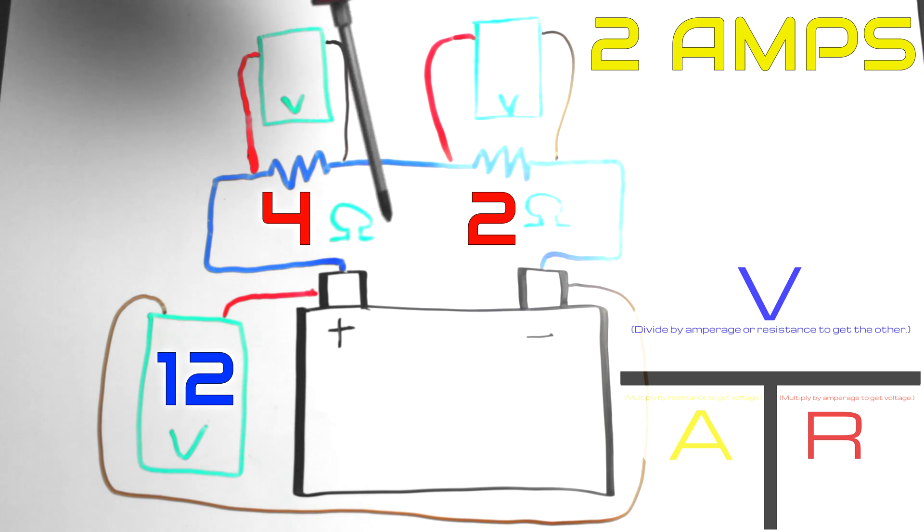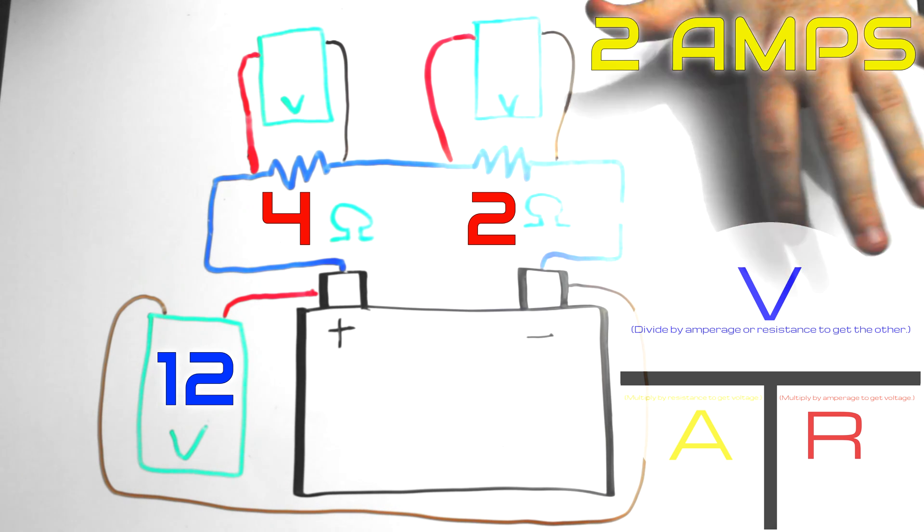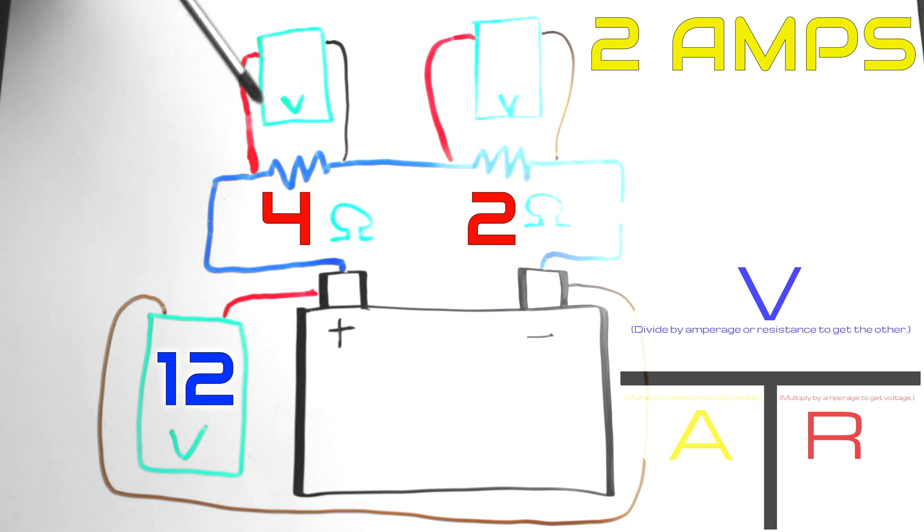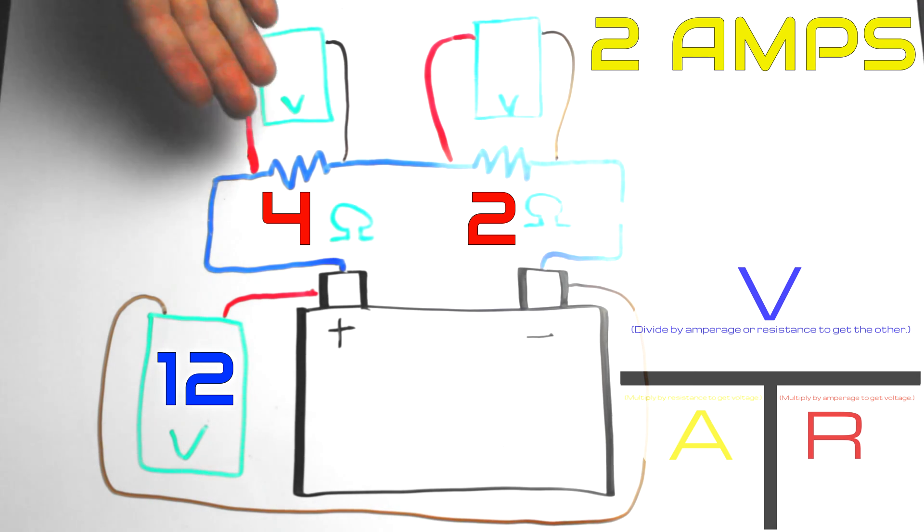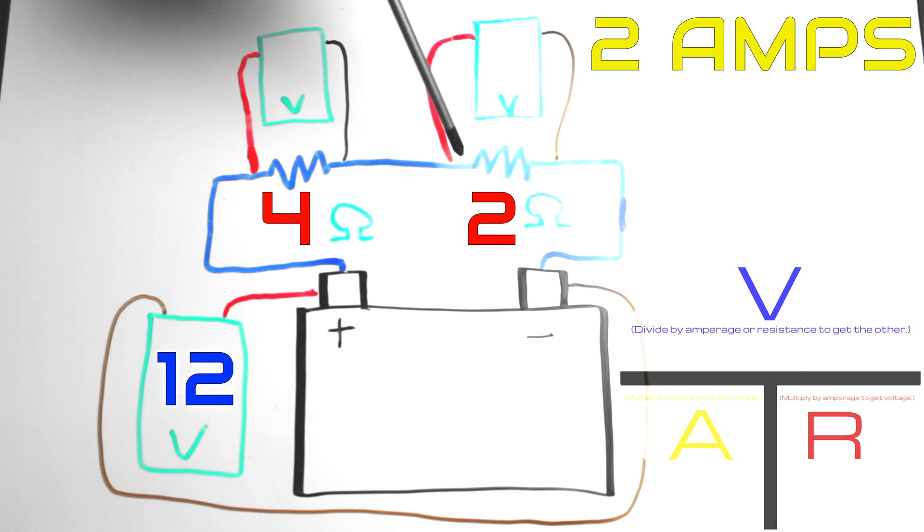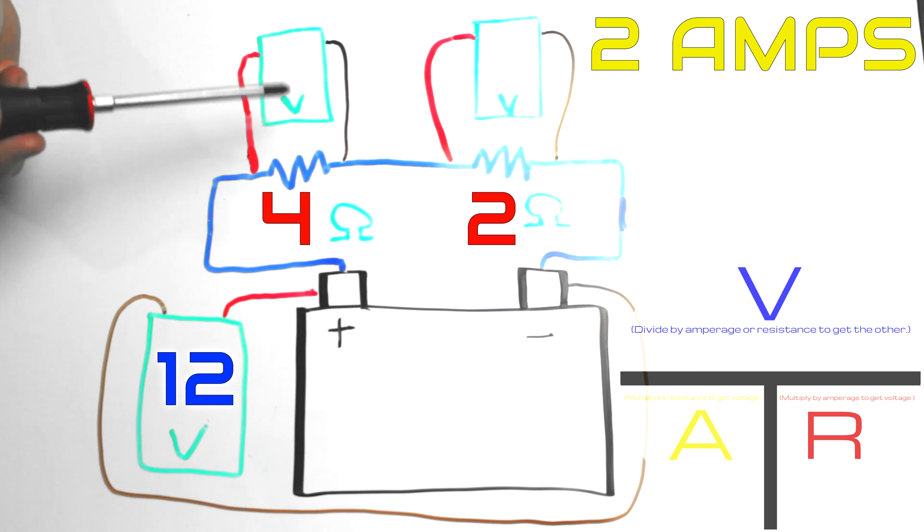The amps don't matter much for voltage drop. It just matters that they are there. Because if you have an open in the circuit then you don't have any voltage drop. Voltage isn't being used up by the resistors so you don't get any volt drop. Using that amperage though we can calculate what we're going to get for voltage drop across these resistors.